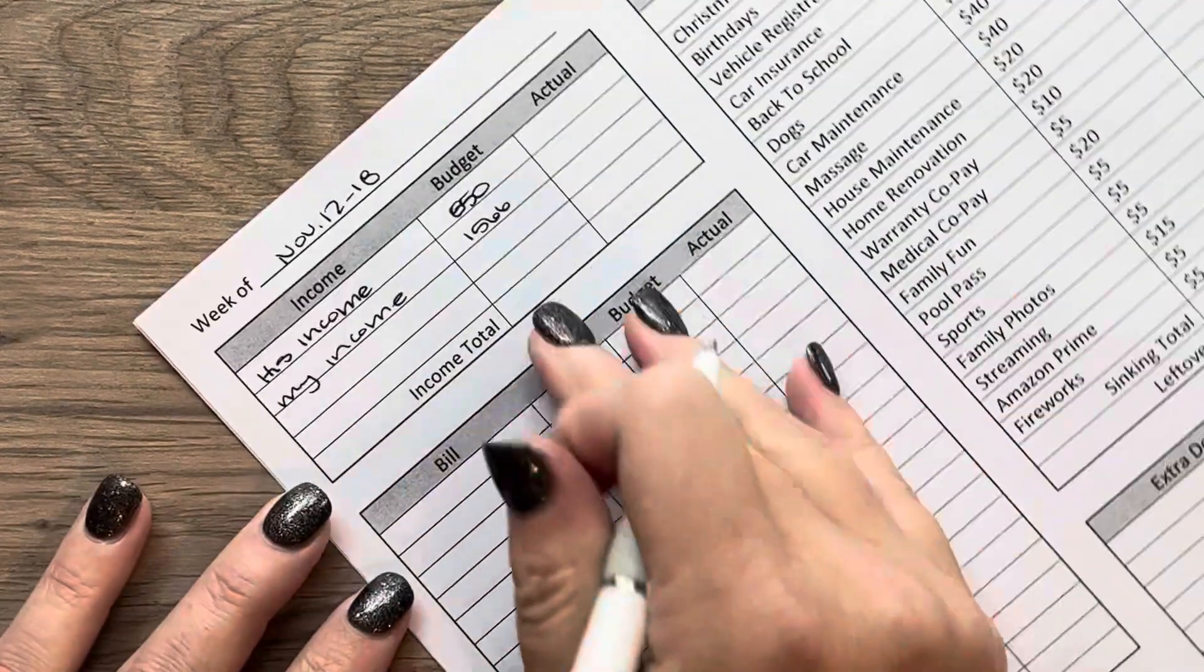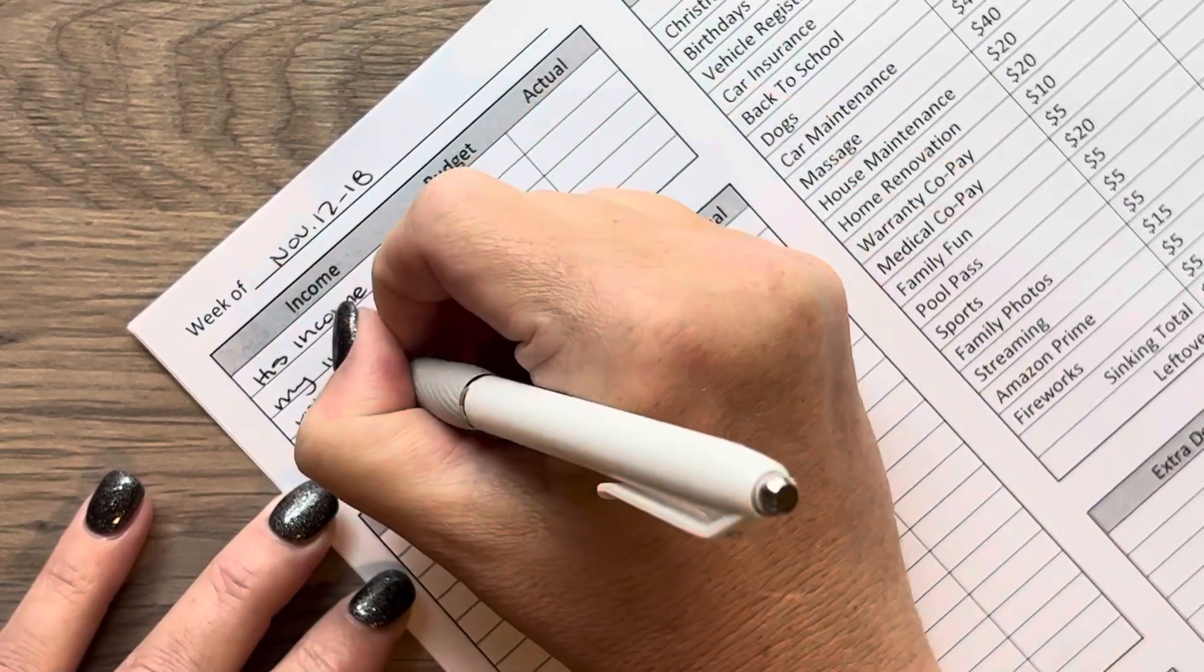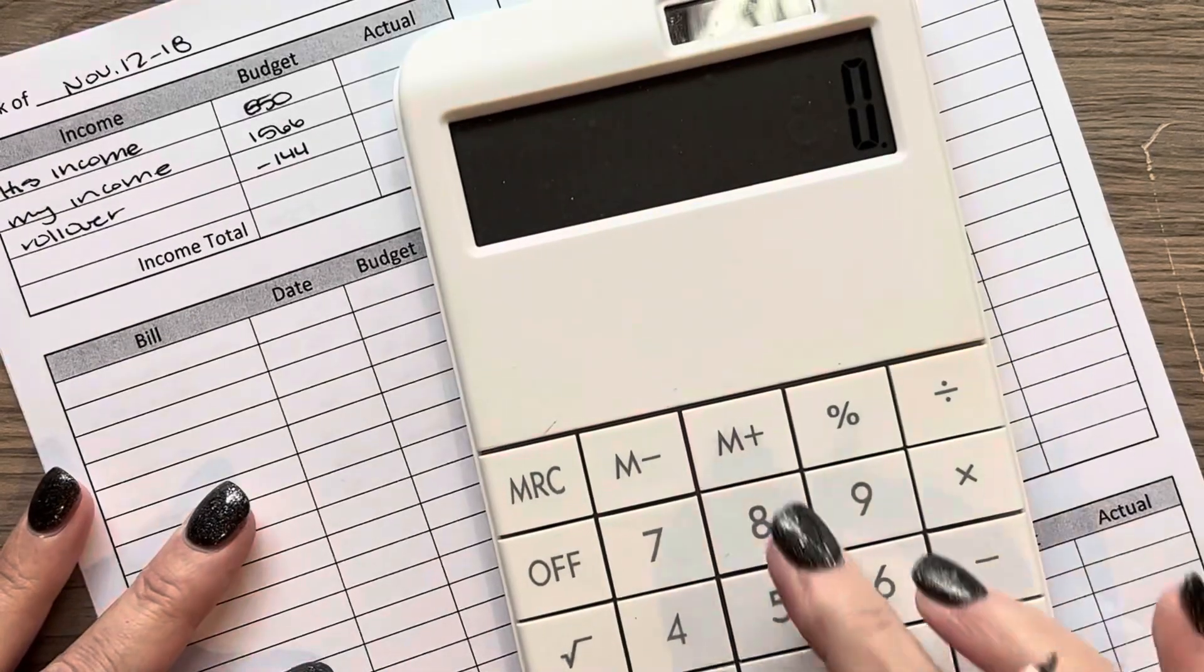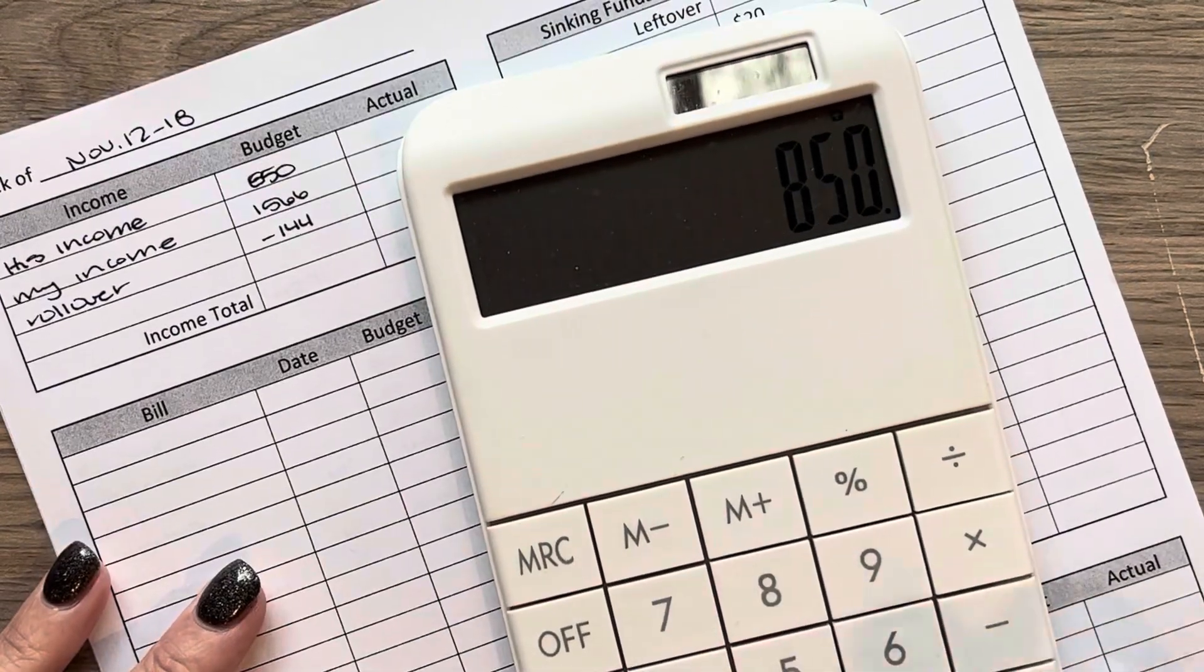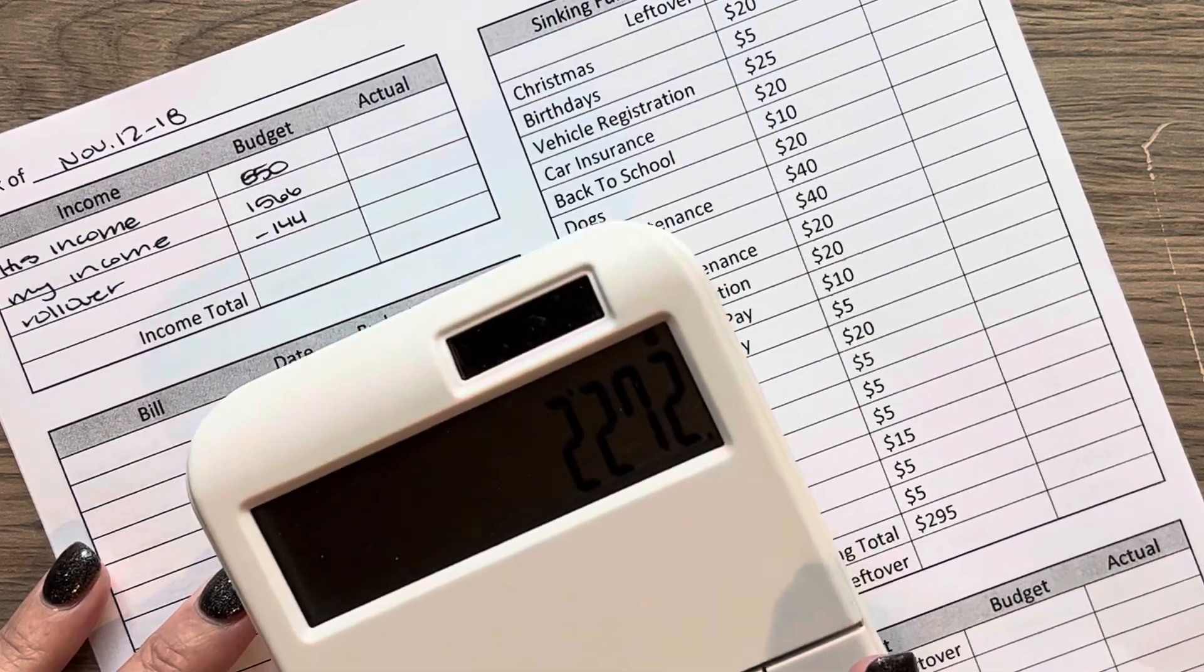And then our rollover was negative $144. So I'm going to add all these up. Which leaves us with $2272.